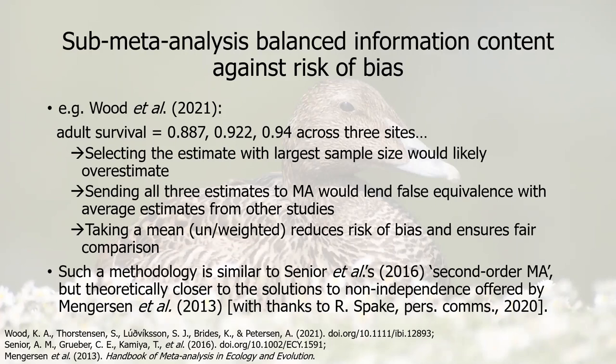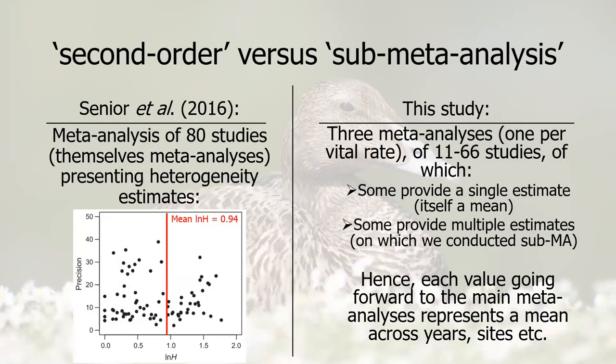We think this methodology is similar to Senior et al.'s 2016 second-order meta-analysis, but it is theoretically closer to the solutions for non-independence offered by Senior et al. In the second-order case it's a meta-analysis of meta-analyses, which is done in quite a few studies, whereas in our case we have three meta-analyses — one per vital rate — of 11 to 66 studies. Some of those studies provide a single estimate which is itself a mean, and others provide multiple estimates on which we conduct a sub-meta-analysis. So each value going forward to the main meta-analysis represents a mean across years and sites.